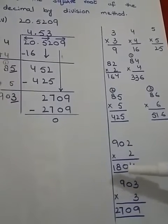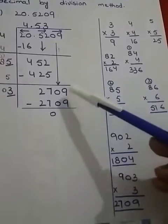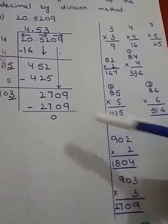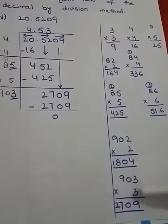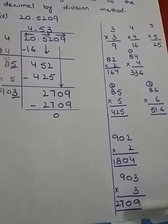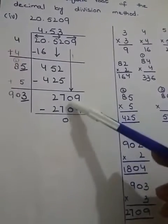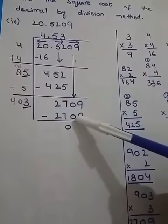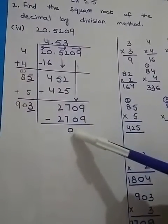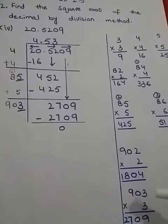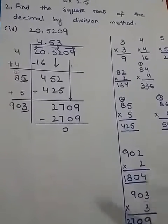902×2 is 1804, which is far from 2709. Then I'm going to jump on this number: 903×3 is 2709. This is exactly divisible by 2709 and the remainder is 0.